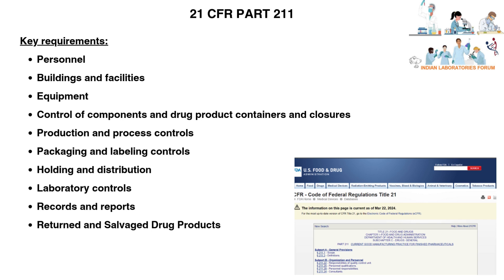Section 6, Packaging and Labeling Controls, details material examination and usage criteria, labeling issuance, packaging and labeling operations, tamper-evident packaging requirements for over-the-counter human drug products, drug product inspection, expiration dating, etc. Section 7, Holding and Distribution, details warehouse and distribution procedures. Section 8, Laboratory Controls, details testing and release for distribution, stability testing, special testing requirements, reserve samples, laboratory animals, and penicillin contamination.